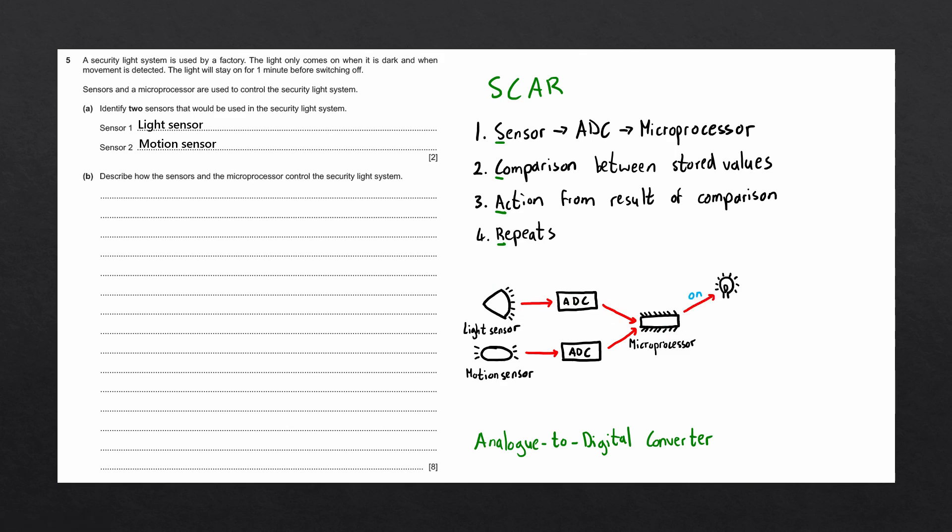The microprocessor will then compare the values from the light sensor and the motion sensor to stored values from the second step of the process. If the light sensor has a low enough reading, in other words, it is dark, and also the motion sensor detects movement.